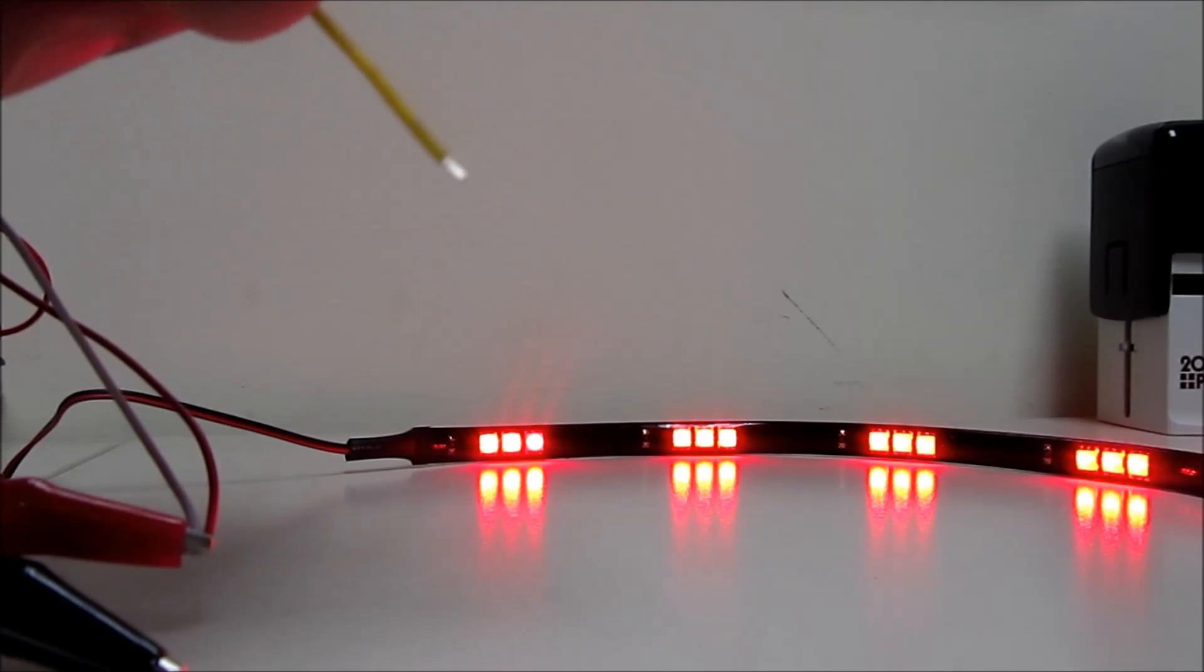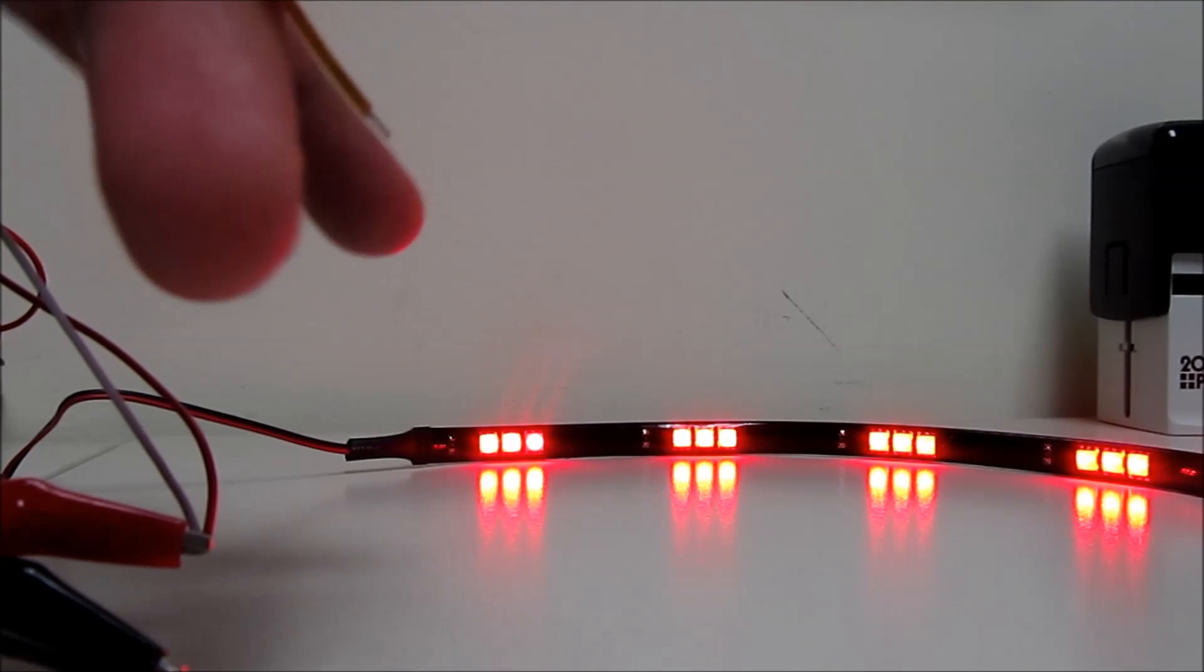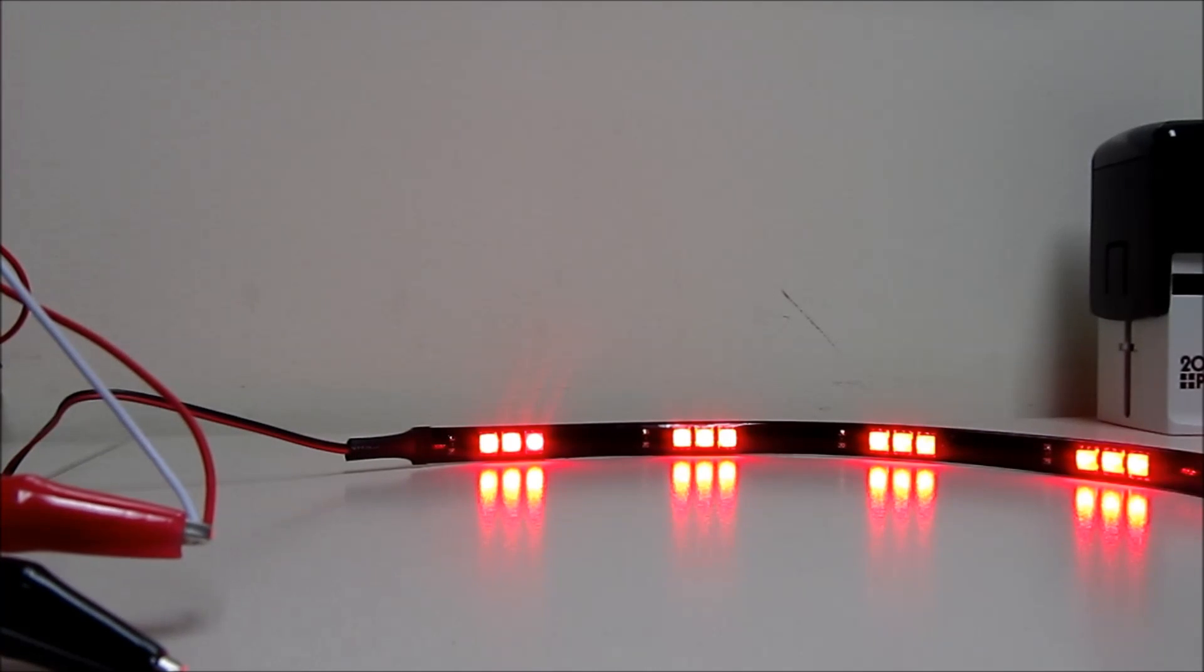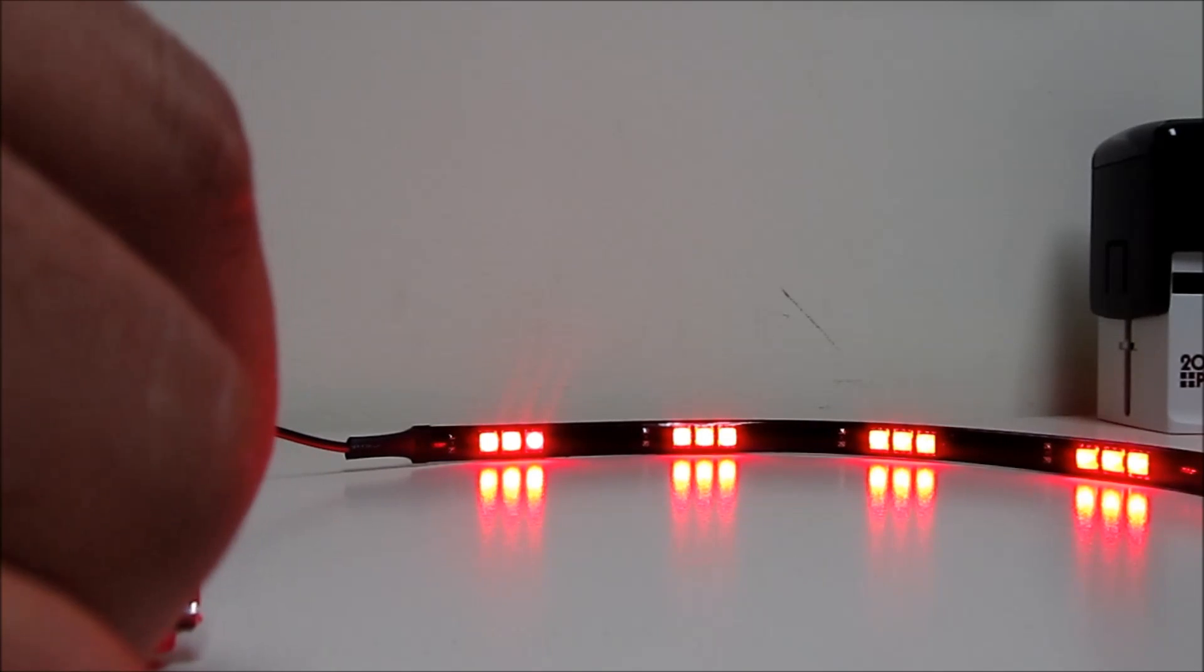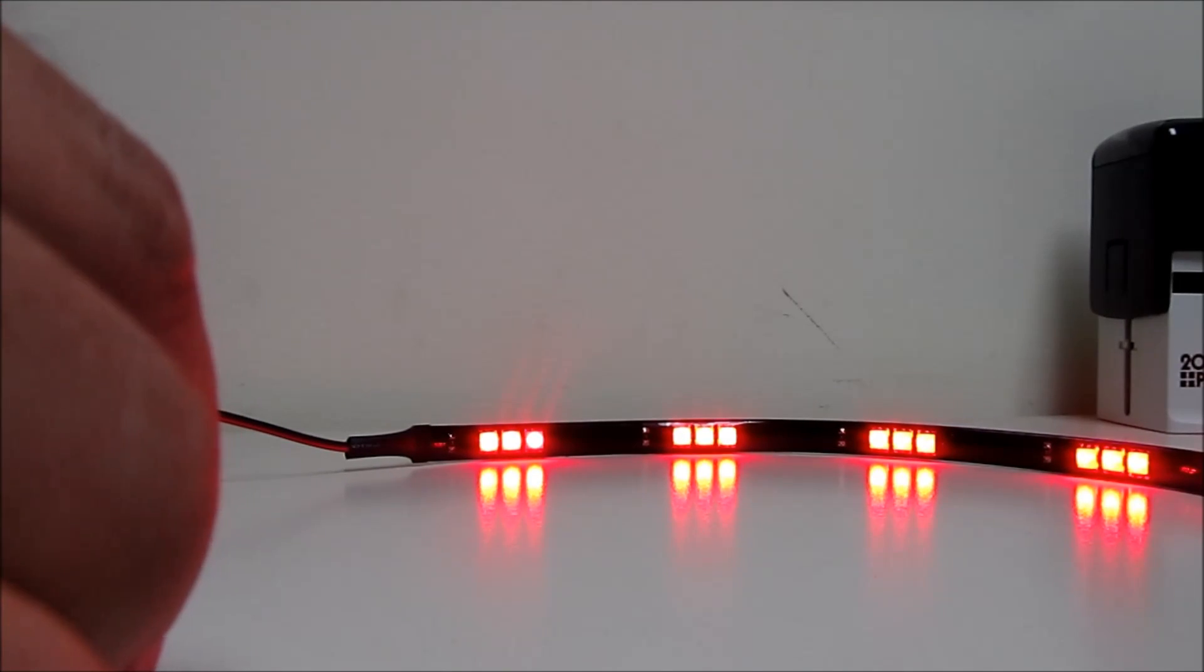And this yellow one will be going into your turn signal wire. So if I were to simulate a turn signal, it will be like this.